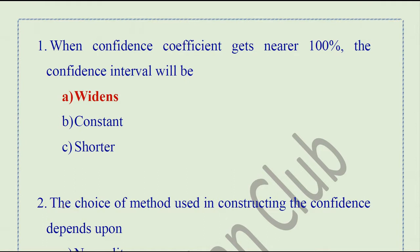Question number 1. When the confidence coefficient gets nearer to 100%, the confidence interval will be widened. The right answer is 'widened' because as we get closer to 100%, the confidence limit or interval will be widened.